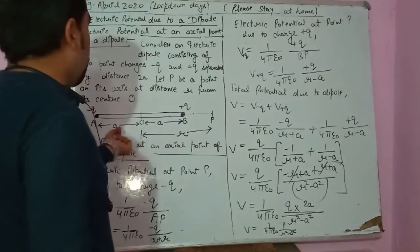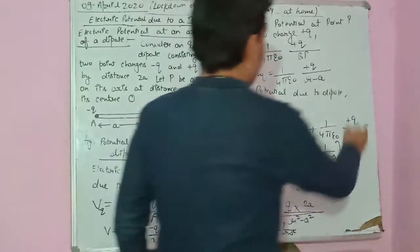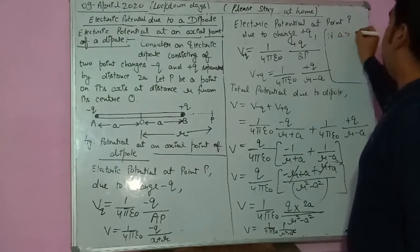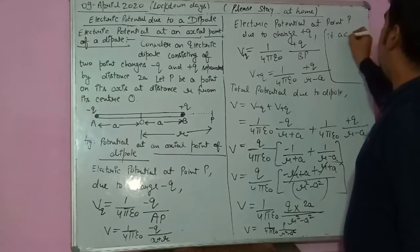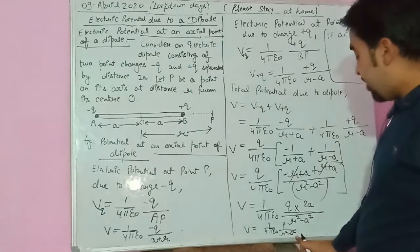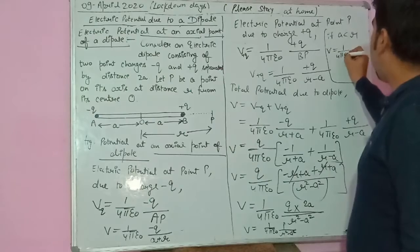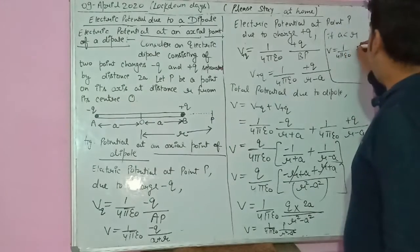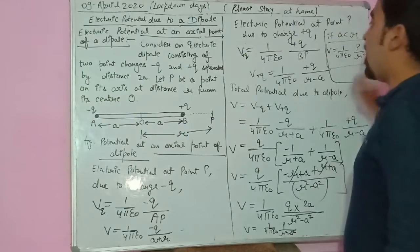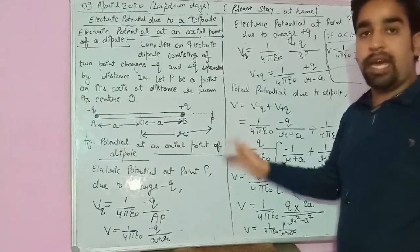For a short dipole, where A is very much less than R, the A² term in the denominator can be neglected. This gives us the final result: V = (1/4πε₀)(p/R²). This is the electric potential at an axial point due to a dipole.